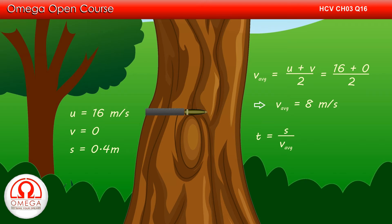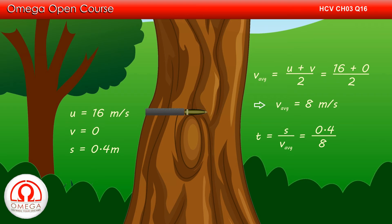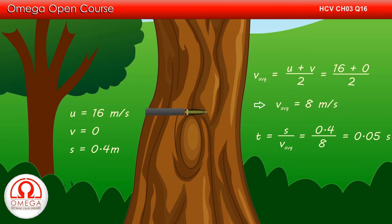As the total displacement is average velocity multiplied by time, time can be written as total displacement divided by average velocity. Putting the values, we get t = 0.4 / 8, or 0.05 seconds.